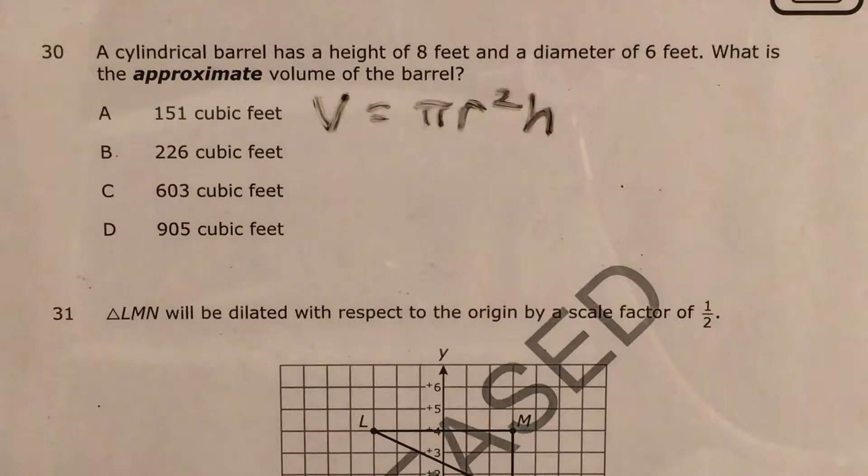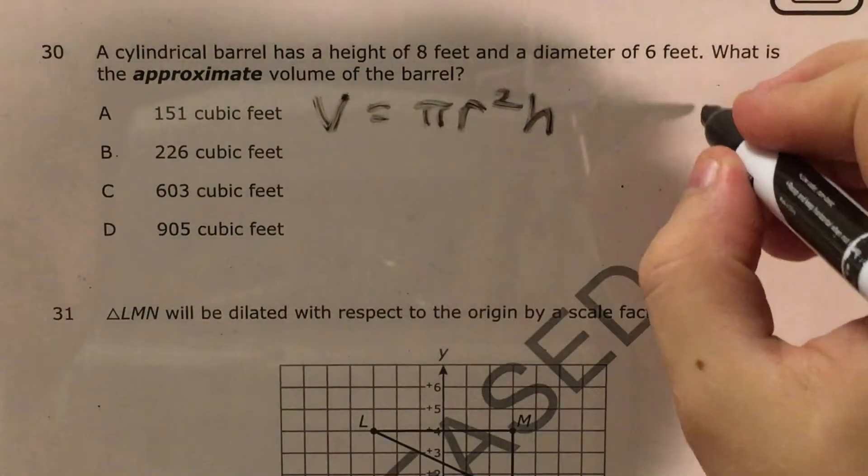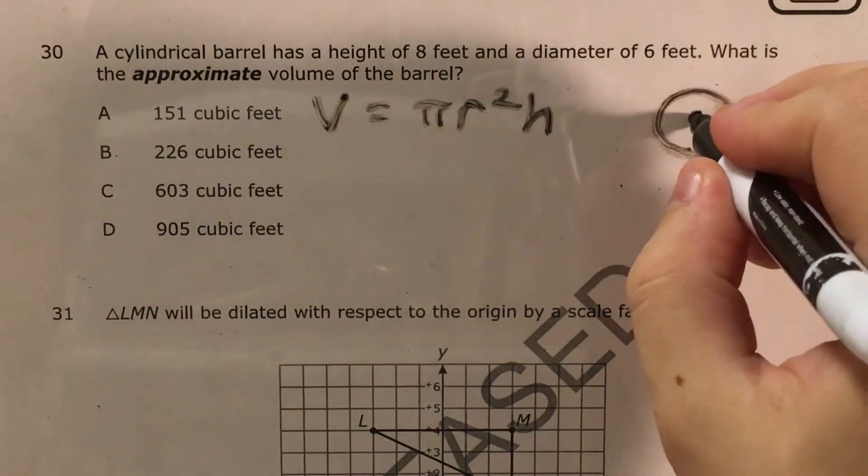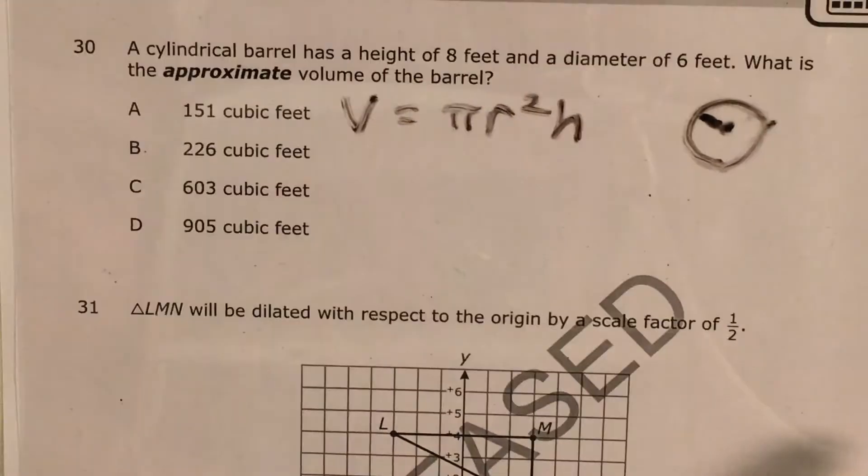Now if you recognize pi r squared, that's the area of a circle, which means that if I draw a circle here, I know that my area is just going to be pi times this radius, which is what r stands for, squared.